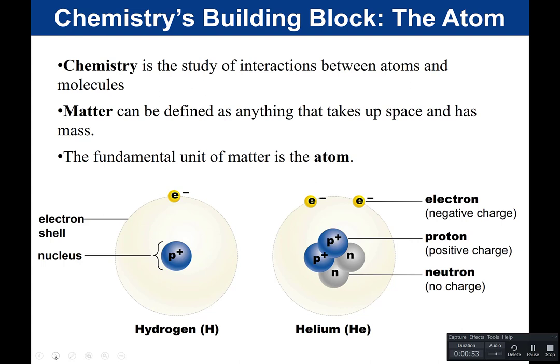If we look at an atom, there are two main parts. We have the nucleus, which is in the center of the atom, and orbiting around it we have our electron shells. In the nucleus of the atom, that's where you're going to find particles called protons or neutrons. Protons carry a positive charge. Neutrons are neutral, or no charge. And around the nucleus, in the electron shells, this is where you're going to find the electrons. Electrons carry a negative charge.